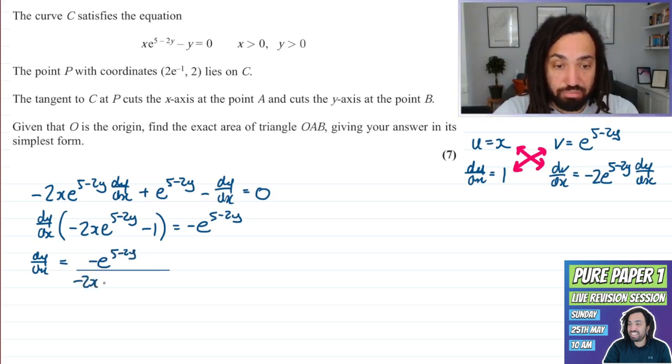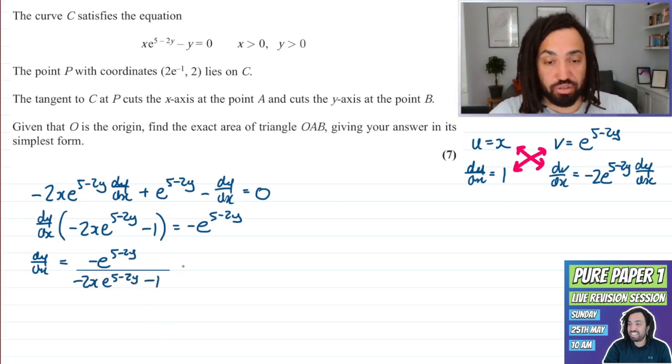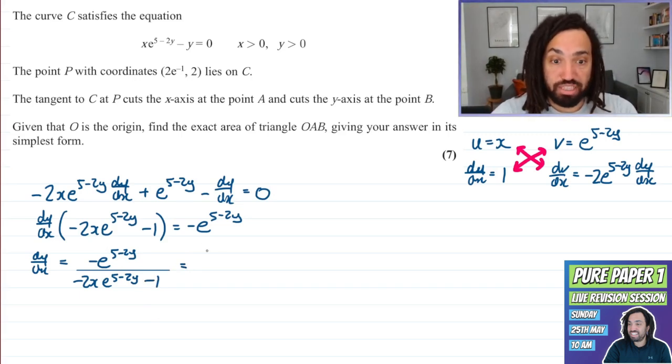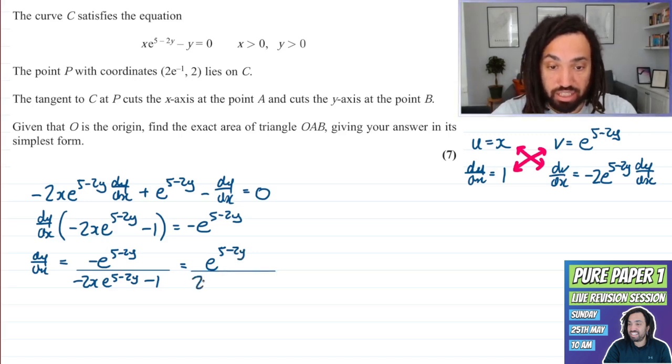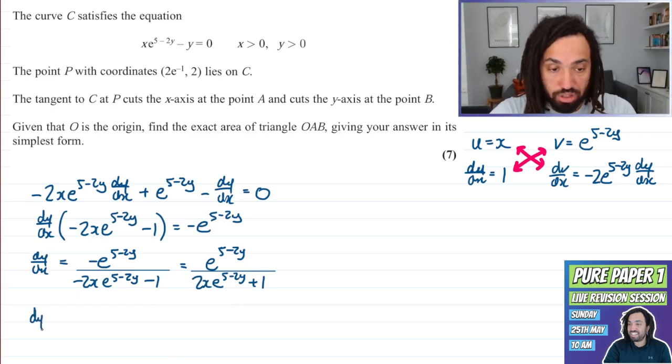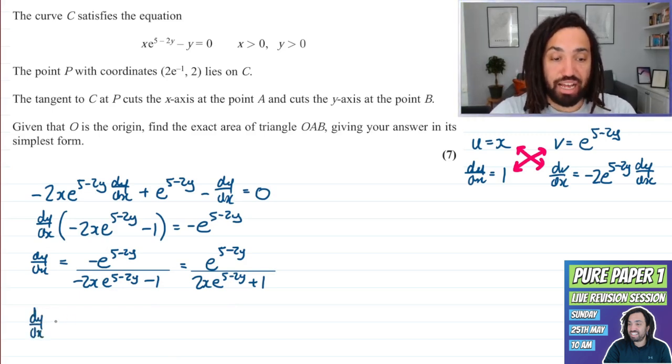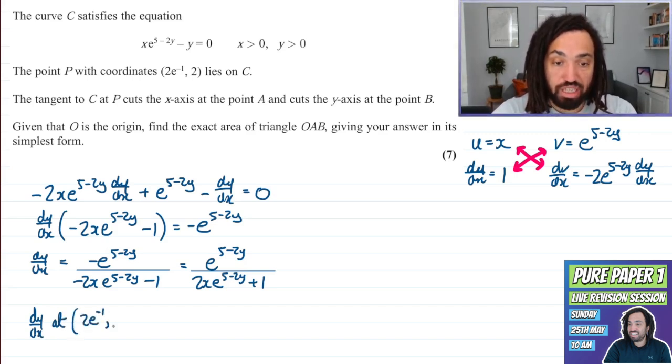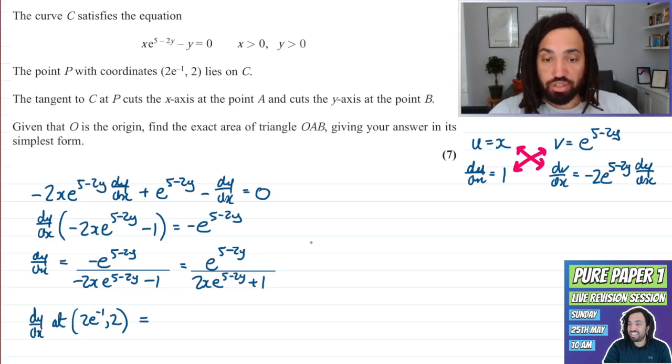Now you don't necessarily have to make DY by DX the subject, you could have subbed in straight away but I've just done it so there you go. Every term here is negative so we can just times through by negative just to make our lives perhaps slightly easier to get it looking like this. Okay so that's DY by DX and what I want to do is I need to find DY by DX at the particular point when we have the X coordinate equal to this and the Y coordinate equal to that. Okay so we just need to substitute in.